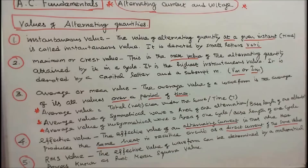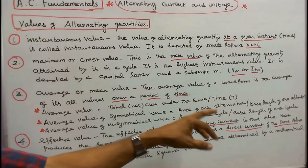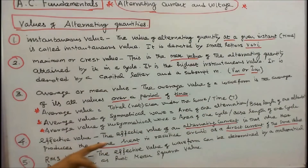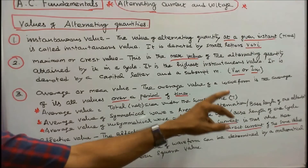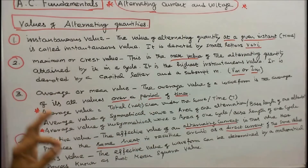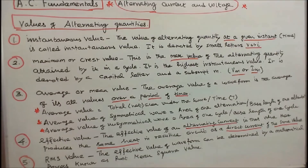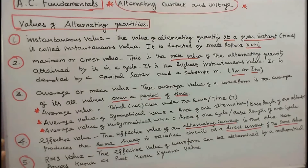Number 4 — Effective Value: the effective value of an alternating current is that value which produces the same heat in a resistive circuit as a direct current of the same value — meaning we measure AC in terms of DC. Number 5 — RMS Value: the effective value of a waveform can be determined by a mathematical process known as root mean square. So effective value and RMS value are the same.